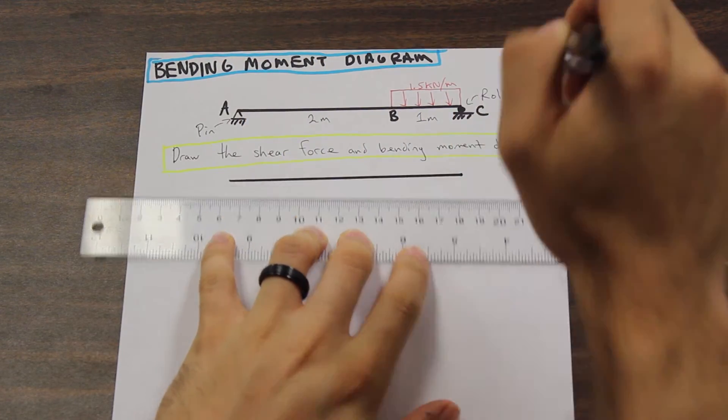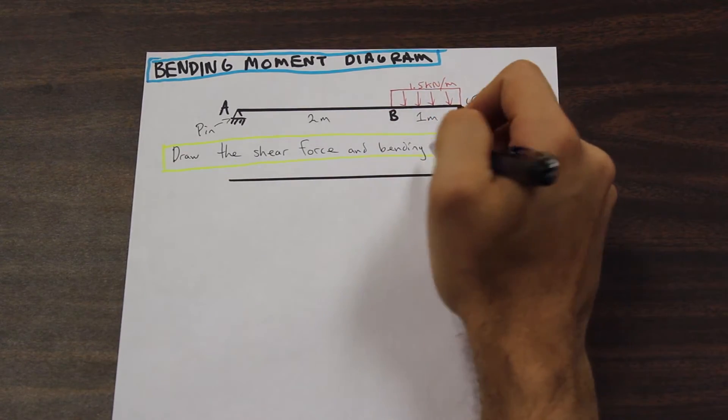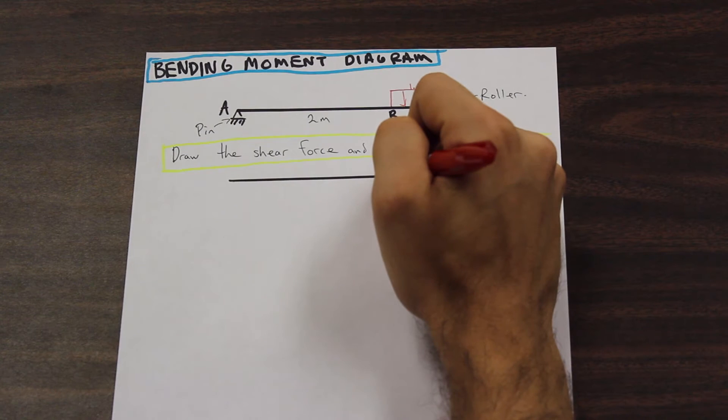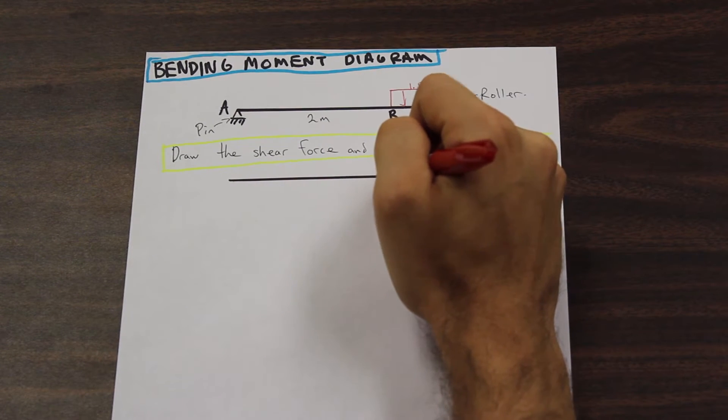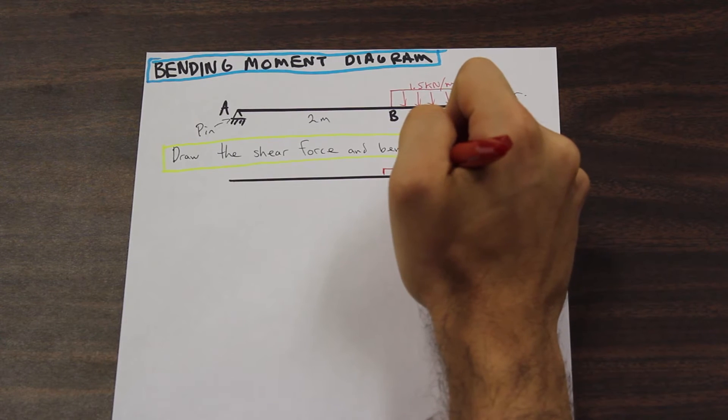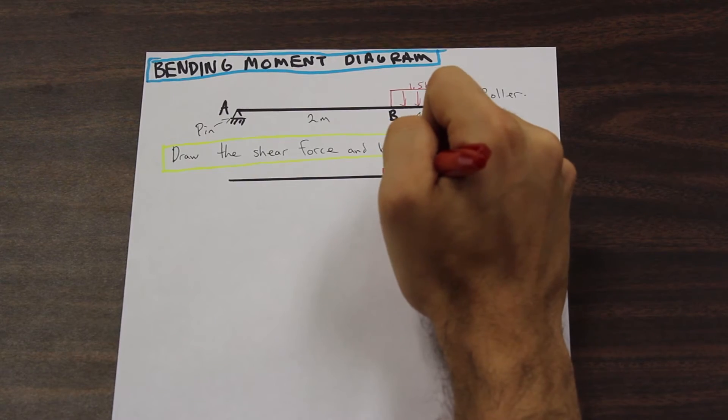So we're going to start by drawing a to scale free body diagram of our beam and we're going to do it directly below the beam here. And there's a reason for this. One, we want to work as cleanly and neatly as possible. But it's going to make it easier for our professor to mark and he will see how nice we do our problems and he's going to give us a good mark.